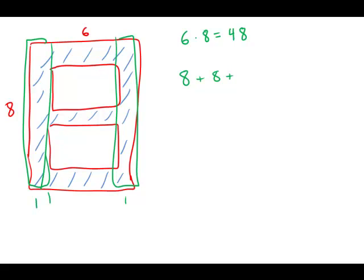And then this whole length of six, we subtract one off on each side, so we're left with a length of four. So this rectangle has an area of four, as does that rectangle.